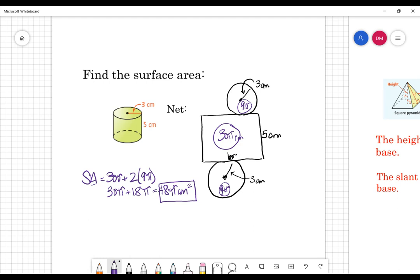Now like I said, that's the exact answer when we leave in terms of pi. We want to go ahead and make sure we do the approximate just for our practice that we're going to see in today's assignment. So if I type that into my calculator, I am getting 150.796. So that six rounds my seven nine up to eight zero centimeters squared.